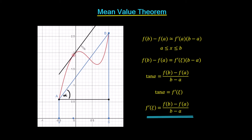Since this is a tangent at this point and the angle alpha has been kept exactly the same, we can say that tan alpha is equal to the derivative f'(zeta) at this point — because this line is the tangent at that point, the very last point at which it meets the curve. So if we equate these two equations, we get that the derivative f'(zeta) equals f of b minus f of a all over b minus a. That's our geometric proof.